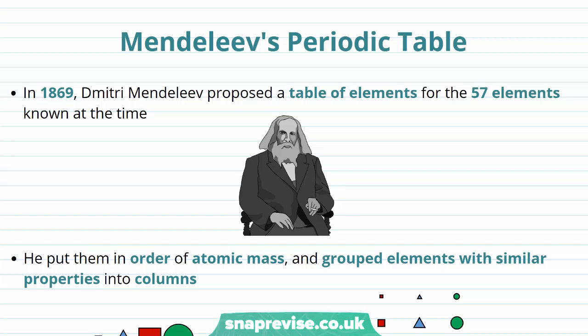But the periodic table is actually a relatively recent invention, and the first table of this kind was proposed in 1869 by Dmitry Mendeleev. He considered ordering the 57 elements that were known at that time into a table.